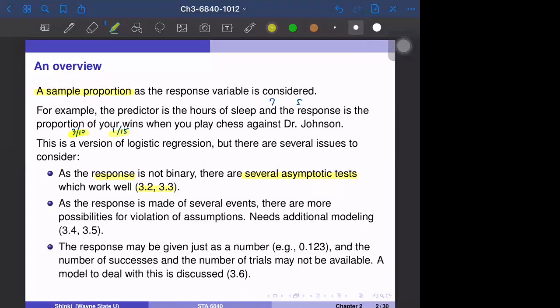Also, if you win two games in a row, maybe your mood is more positive, and in the third game, you are more likely to win. That's possible. So that's kind of assumption that violates the assumption of this, the binary, the binomial, the outcome model in chapter three. So we need some modeling, additional modeling that will be discussed in 3.4 and 3.5.